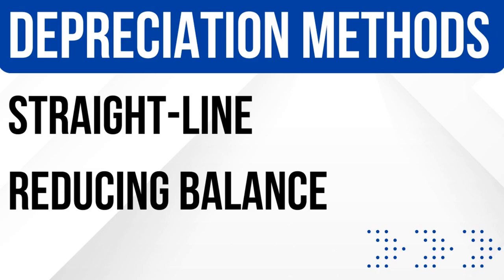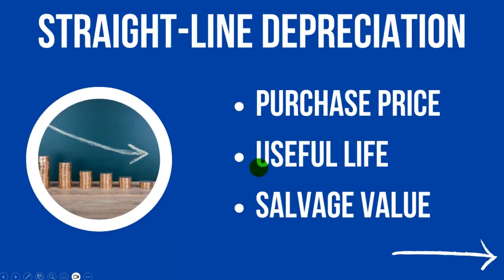If we want to depreciate an asset, we have to use some sort of method to calculate the depreciation — that's why we have these methods. To calculate straight line depreciation, we need three important bits of information. Number one, we need the purchase price of the asset. So if the asset is a computer, we need to know the price of that computer — it could be a thousand dollars, euros, pounds.